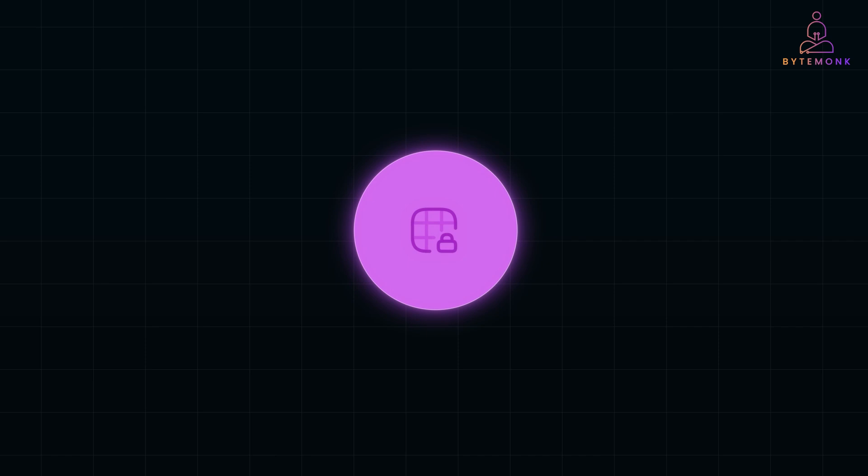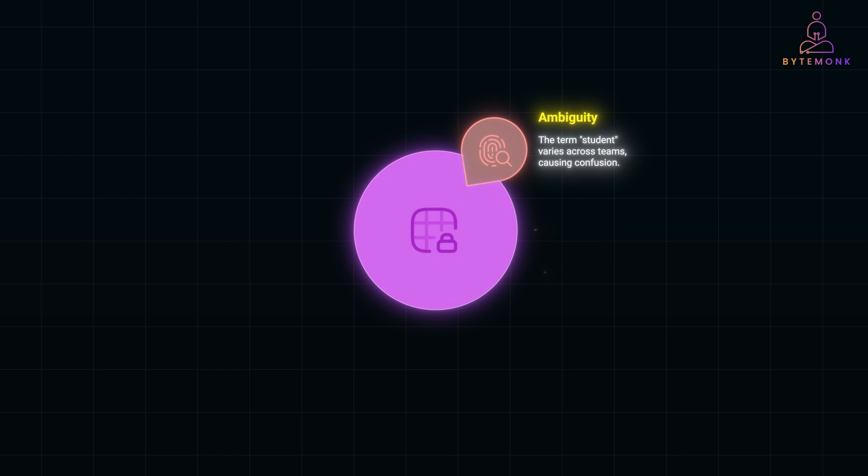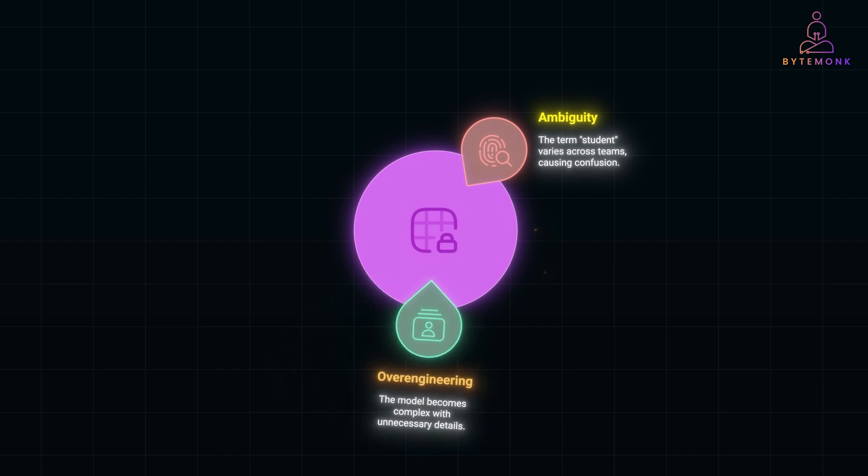Using a single model to represent 'student' across all teams leads to several challenges. First, the term 'student' becomes weak, as it means different things to different teams. The model must include unnecessary details to satisfy everyone, making it overly complex. And simplifying the model for one team might leave out important details for others.